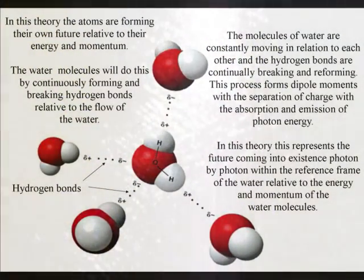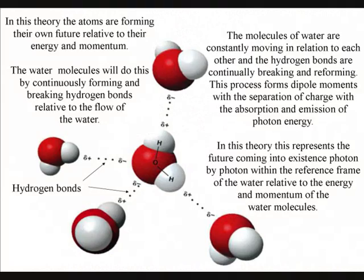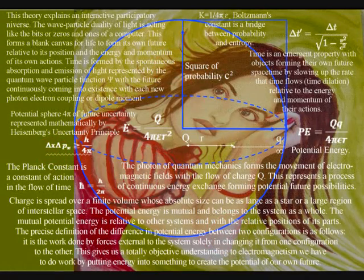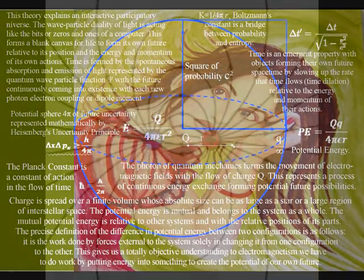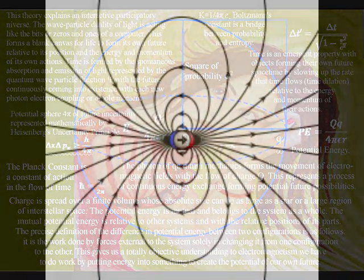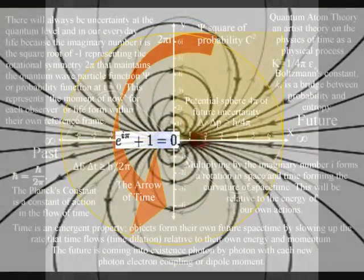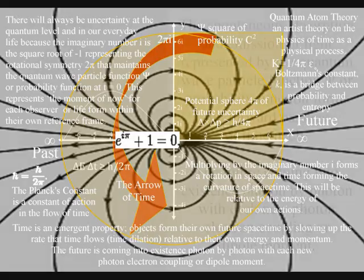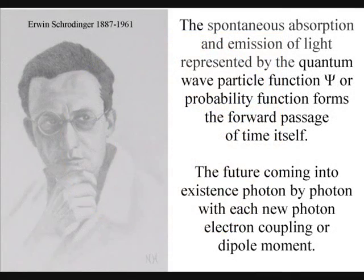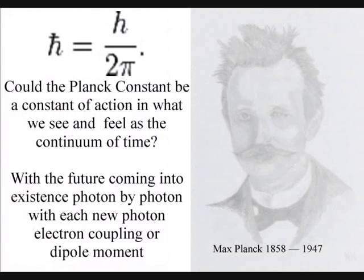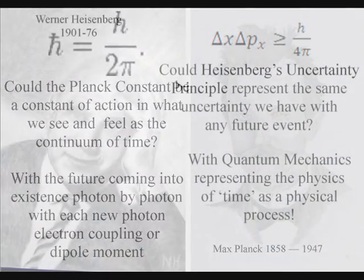In such a theory, the moment of now relative to each individual observer is the only thing that exists within a universal process of energy exchange, with a past that has gone forever and a future that only exists as a probability wave function that forms the uncertainty of everyday life. At the smallest scale, this is represented mathematically by Heisenberg's Uncertainty Principle.